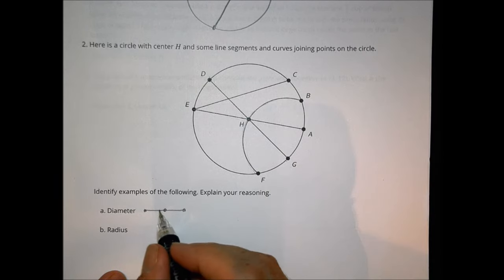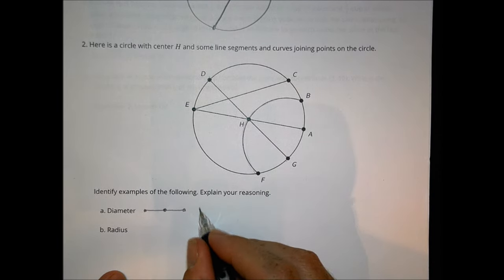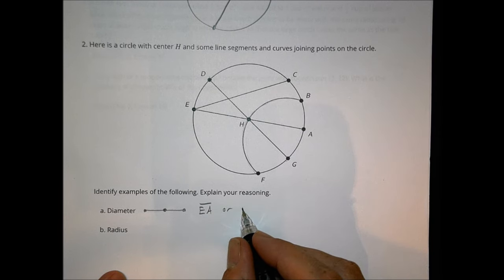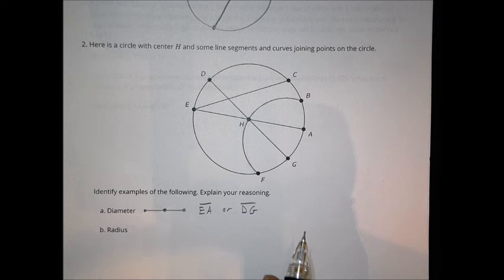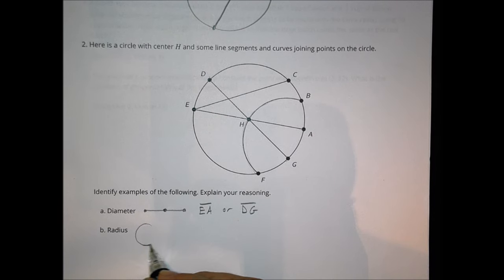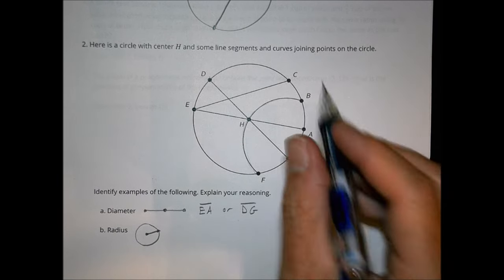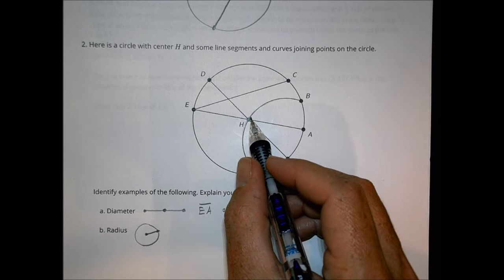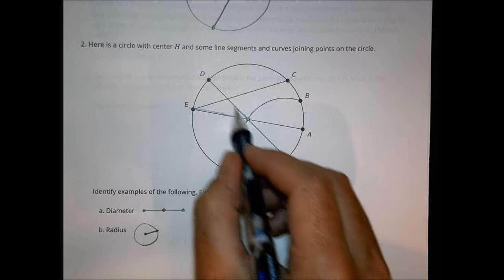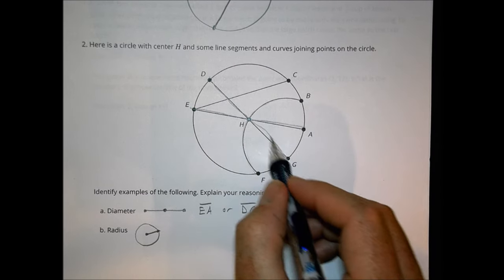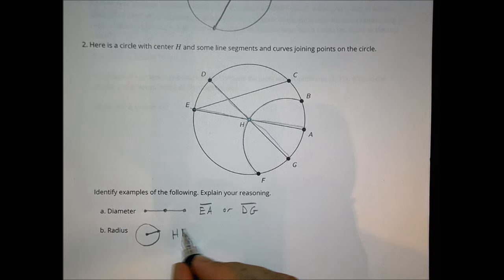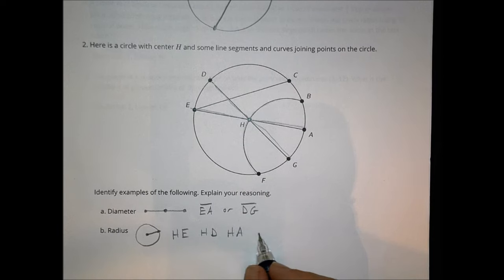B to F goes from edge to edge but it's not a straight line through the center, so it doesn't count. So EA or DG are both correct diameters. For the radius — the distance from the midpoint to an outer edge — I have straight lines from H to E, H to D, H to A, and H to G. Any of those are acceptable answers.